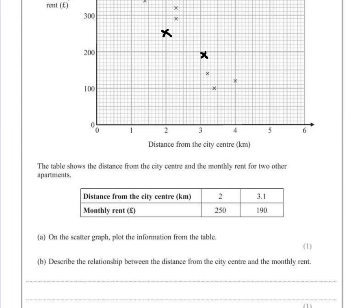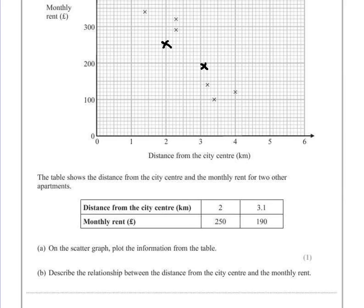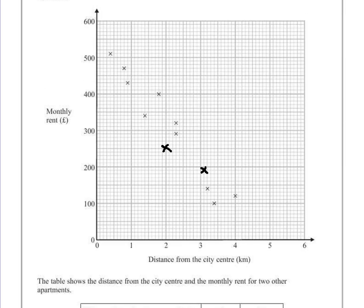Part B. Describe the relationship between the distance from the city center and the monthly rent. If we're asked to describe a relationship, we're giving a wordy description of what's actually happening.